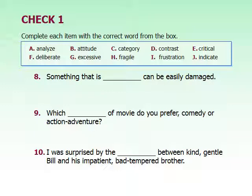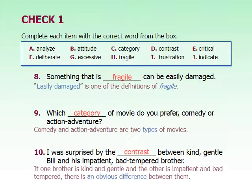'Something that is blank can be easily damaged — what word describes something that could easily be broken?' 'Which blank of movie do you prefer — comedy or action adventure? These are both different types of movies.' 'I was surprised by the blank between kind, gentle Bill and his impatient, bad-tempered brother — one clue is the word between, so are we talking about how they're the same or how they're different?' The answers are: fragile, category, and contrast.